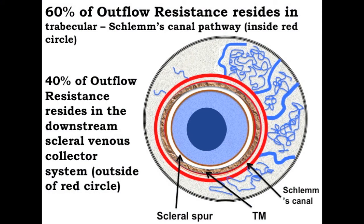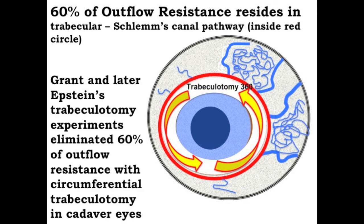All trabecular outflow is anterior to the important gonioscopic landmark, the scleral spur, and all uveoscleral outflow is posterior to the spur. The seminal laboratory outflow resistance studies by Morton Grant, and later refined by David Epstein, show that approximately 60% of outflow resistance resides in the trabecular meshwork-Schlemm's canal area. This still leaves 40% of resistance to outflow downstream to the canal and the scleral channels and veins. Epstein stressed that this is why canal-based procedures typically result in mid-teens intraocular pressure.